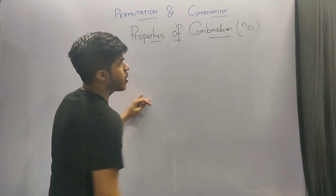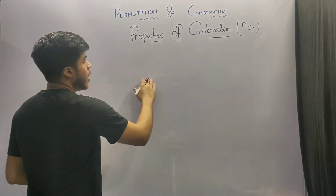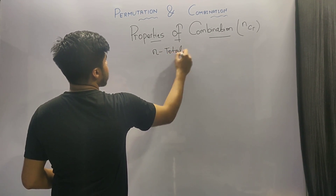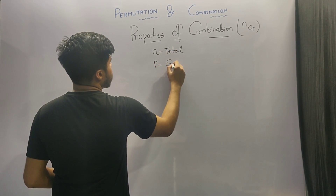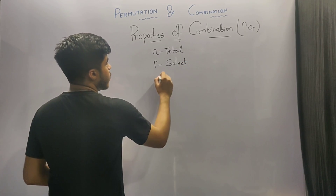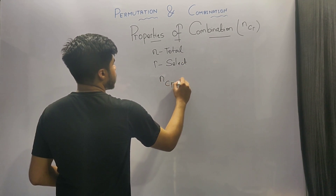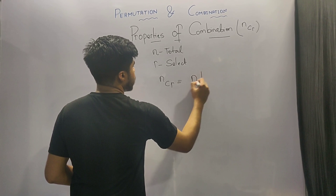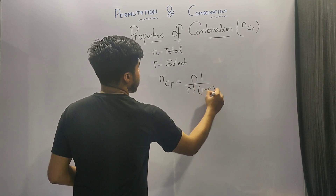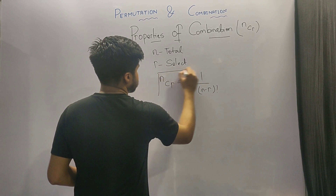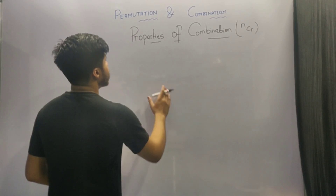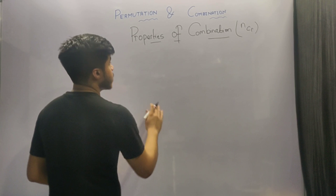Combination is represented by nCr, where n is the total number of objects and r is the number of objects that we have to select. The formula of nCr is equal to n factorial upon r factorial into n minus r factorial. With this short recap, let's move ahead with its properties.